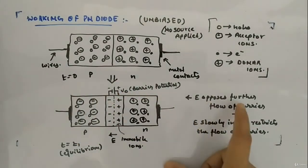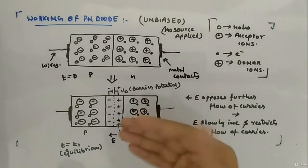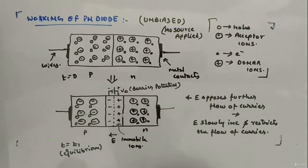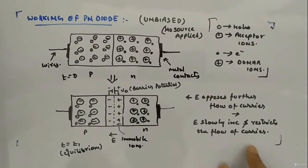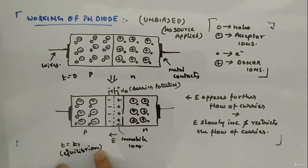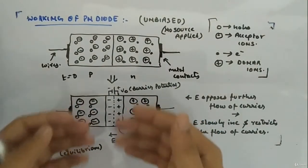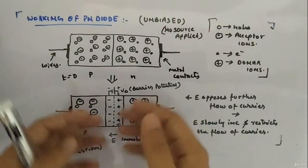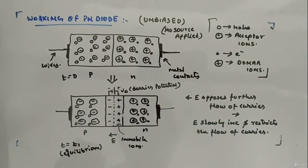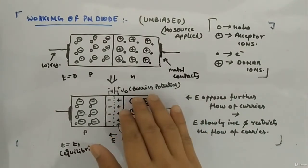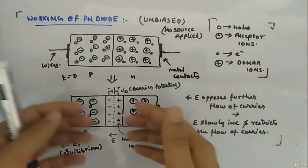The electric field opposes the further flow of carriers. After some time, when the electric field strength becomes significant, it will restrict the flow of electrons and holes. At some point, an equilibrium condition is reached — the electric field is strong enough that there is no further flow of electrons and holes toward the junction. That is why it is called barrier potential: it acts as a barrier for further flow of carriers.